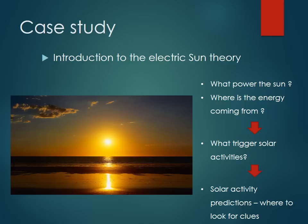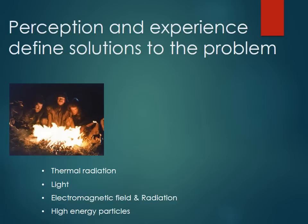In this case study, we introduce the Electric Sun theory. This theory is very useful in terms of making us understand different perceptions of how we actually study the Sun. If you look at the Sun from this perspective, just like in this picture, you can see it's a bright object in the sky. A lot of questions arise about what that thing really is — such as what powers the Sun, where does the energy come from, and what triggers all those solar activities. When we understand this, we can actually make predictions and know when the next eruption will be. Perception is what we want to emphasize because it defines the direction of the solution.